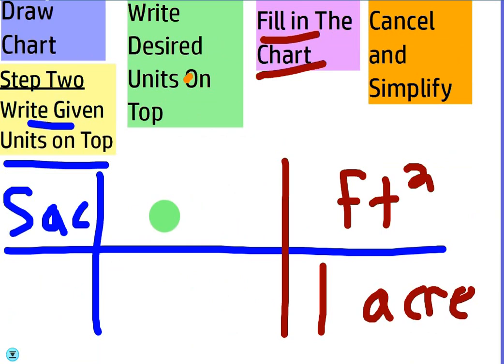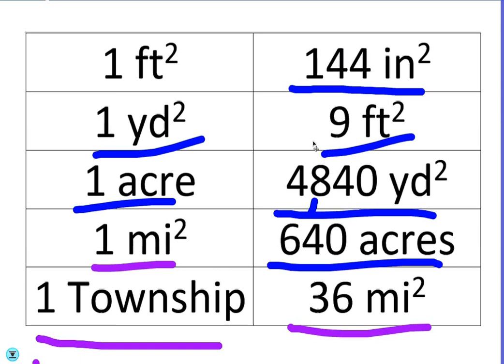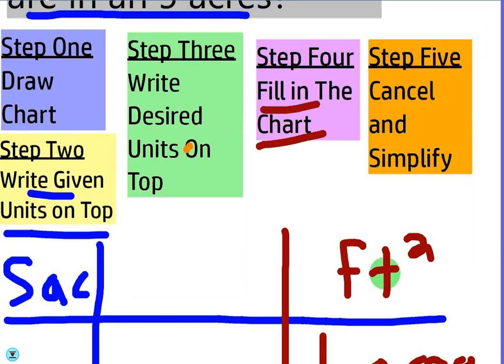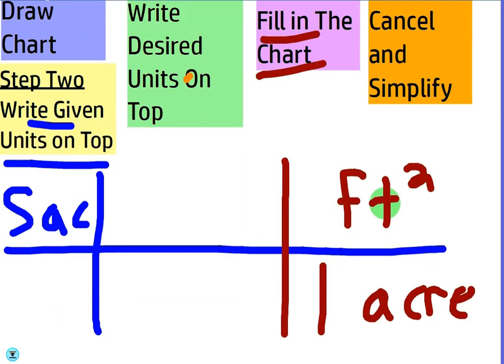We need to fill in this middle column right here. We're trying to get square feet, but in our chart we don't really have a way to go from square feet to acres. But what would be the in-between? What can we use that's between feet and acres? Square yards, correct. So we're going to put square yards in the middle. That'll be our mediator. We know that there's 4,840 square yards in an acre.